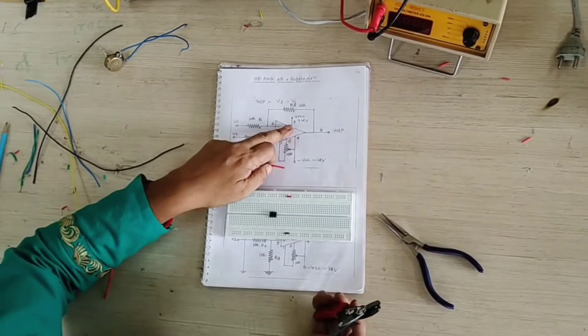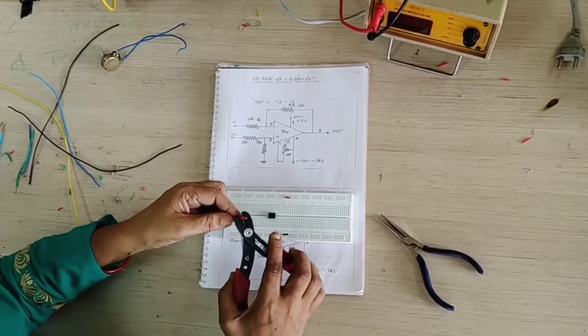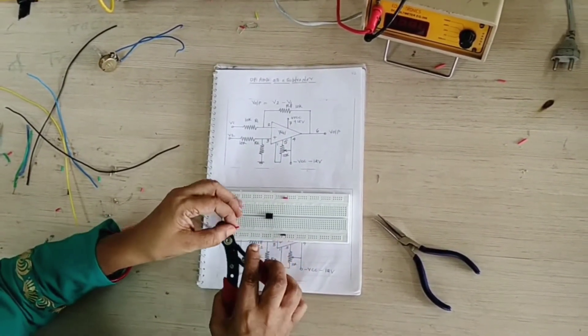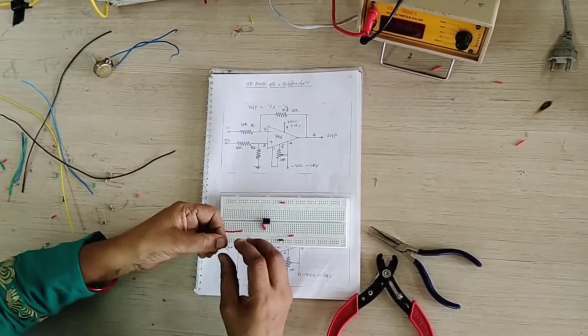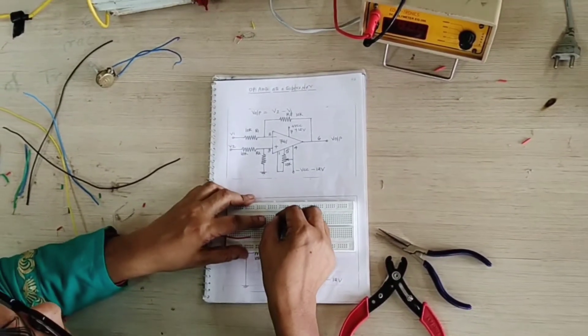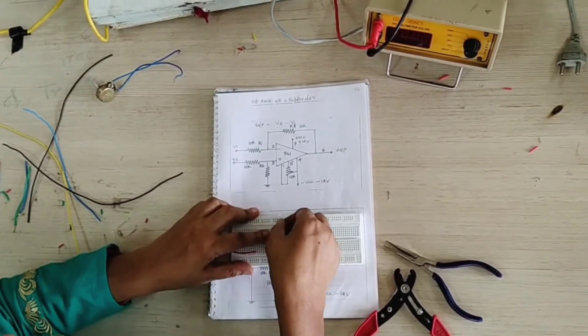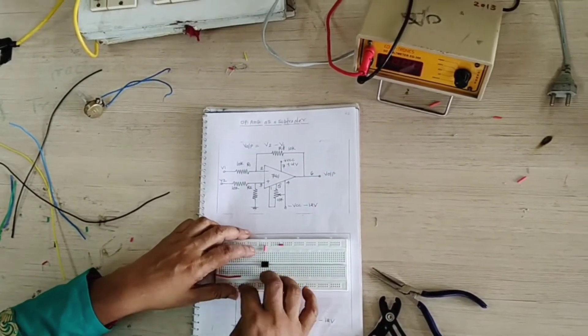Now the IC, pin number 7 is your VCC. So we indicated the red color of the wire. Pin number 7, this is your pin number 7. Red color of the wire.